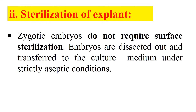The second step is sterilization. Generally, zygotic embryos are very well enclosed within the sterile environment of the ovular or ovarian tissues, so they do not require surface sterilization. We simply dissect out the embryos and transfer them to the culture medium under aseptic conditions.